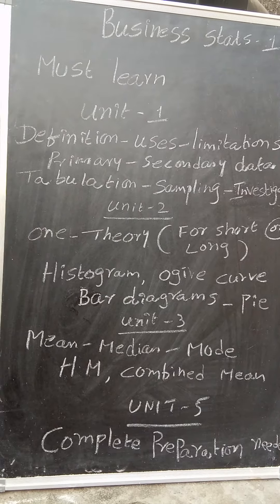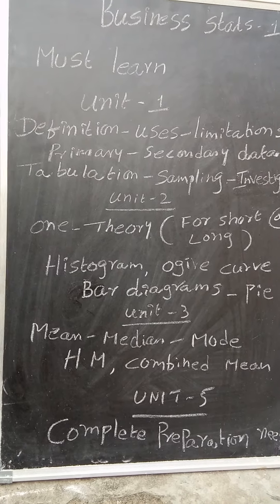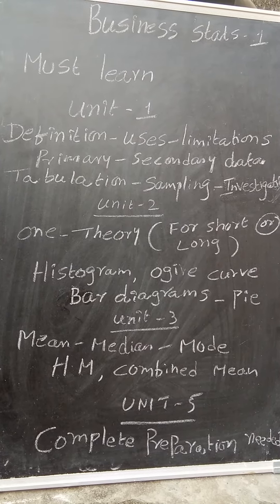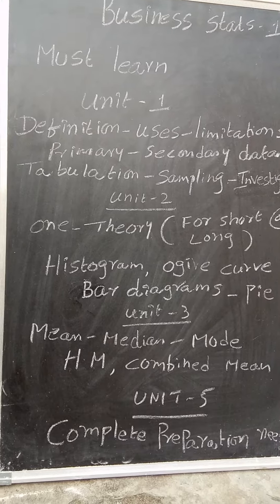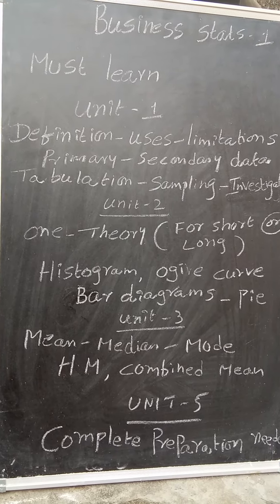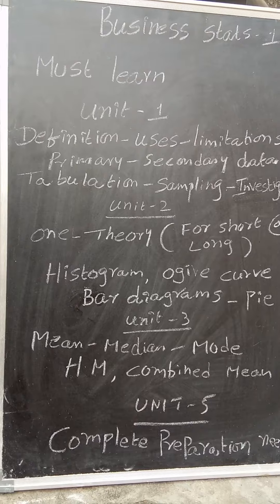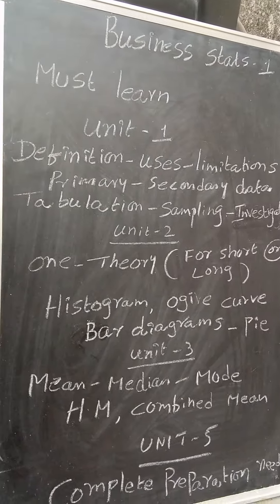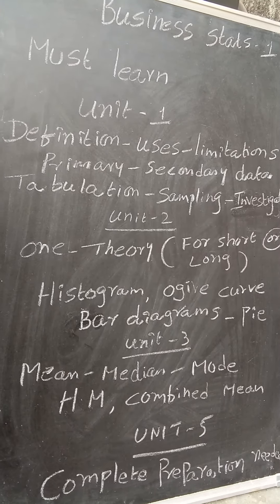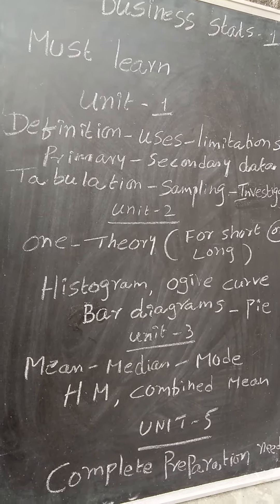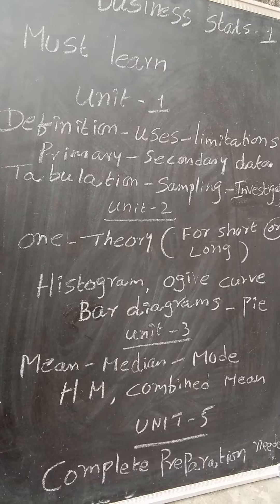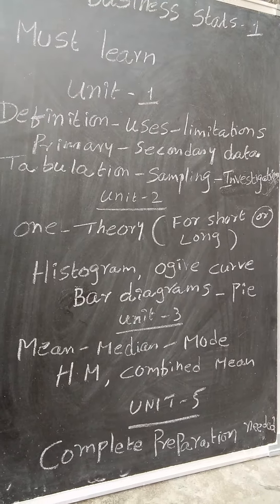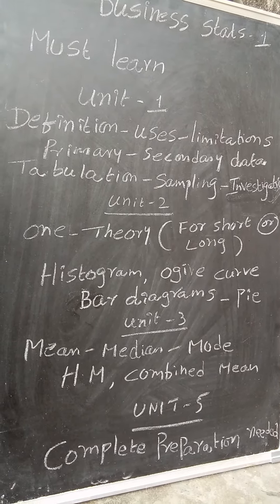My dear students, business statistics law manam, unit number 1, unit number 2, unit number 3 and 5, bhaganiya chakkat marksmanus course is coach amma. Unit number 1 law manam, we should learn about definition of business statistics and we should learn about uses and limitations of business statistics and characteristics and functions. These are very important questions. From there you are going to get one definite question. Then you know my dear students, primary data and secondary data is also very important and tabulation, sampling and statistical investigation. These are the things which you need to learn in unit number 1.